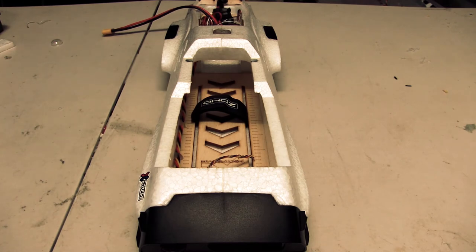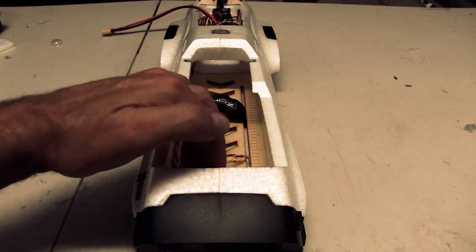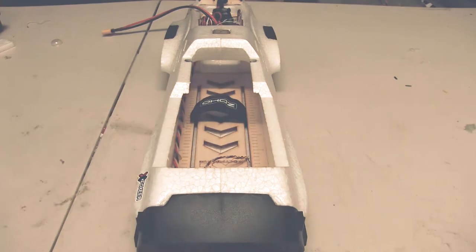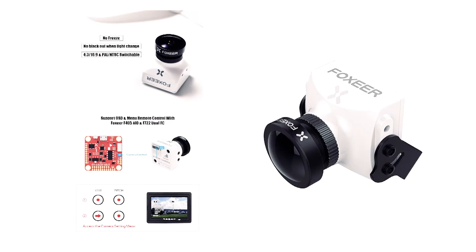So this video here we're going to wire up the Foxeer. There's a wiring here, it's a Foxeer Falcor 2. I'm going to wire that up to our F722 wing board which is in here.